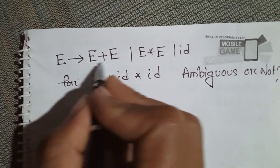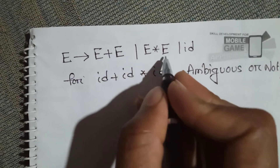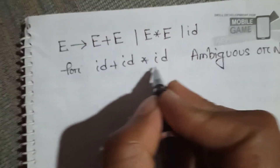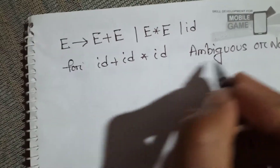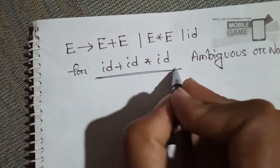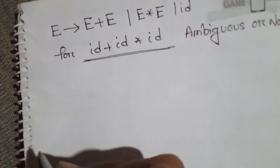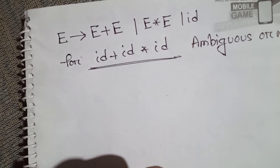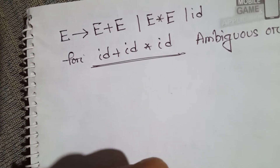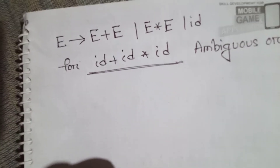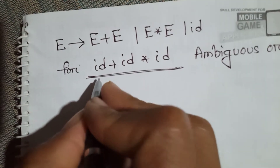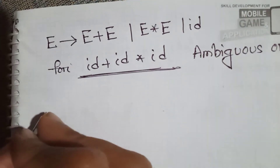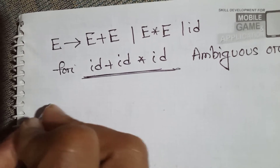Given the grammar E → E + E | E * E | id, is it ambiguous or not? We know a grammar that produces more than one parse tree is called ambiguous. So we have to prove whether this grammar is ambiguous or not.